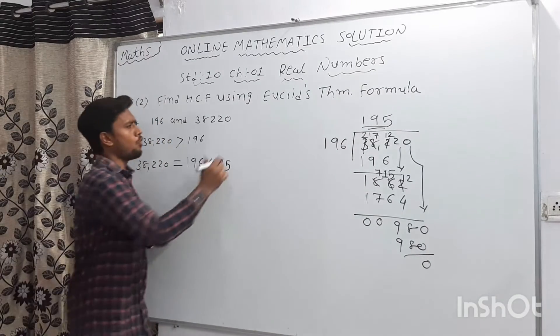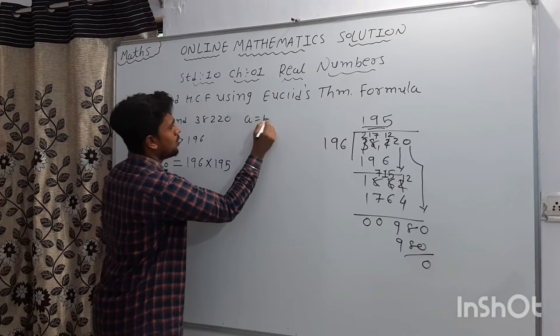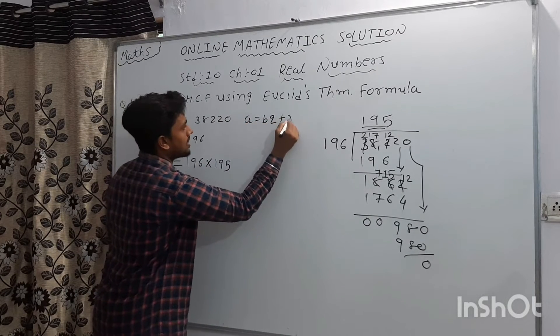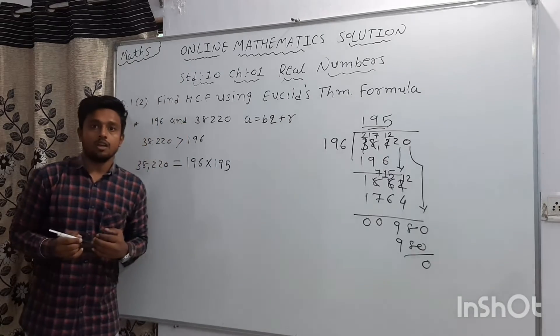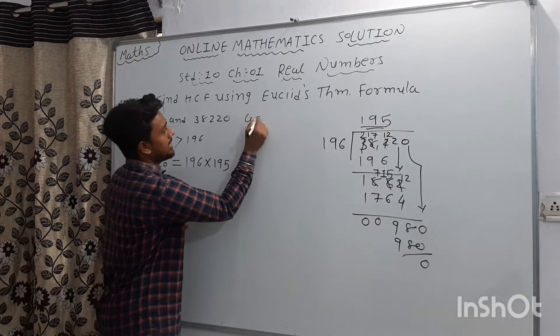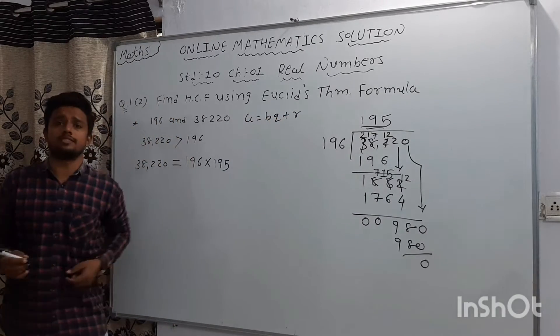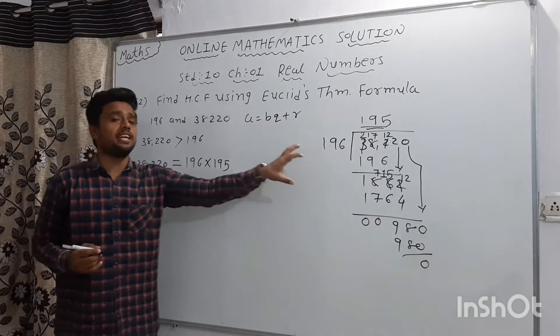A is equal to B times Q plus R. Yes friends, we know that A is equal to B times Q plus R, that is Euclid's theorem formula. And in division method,